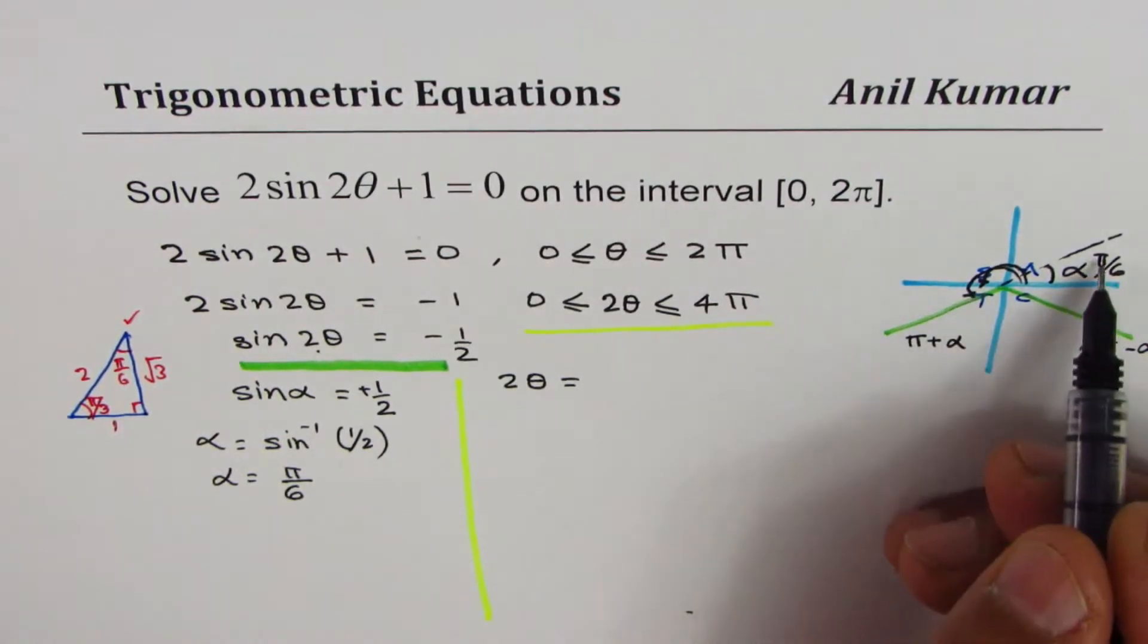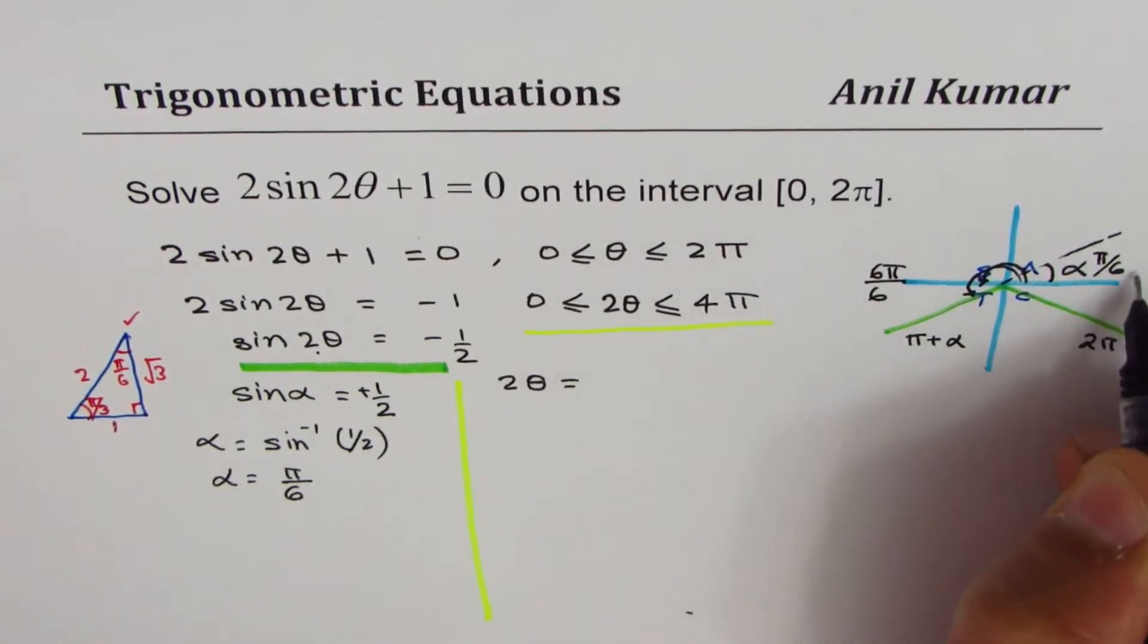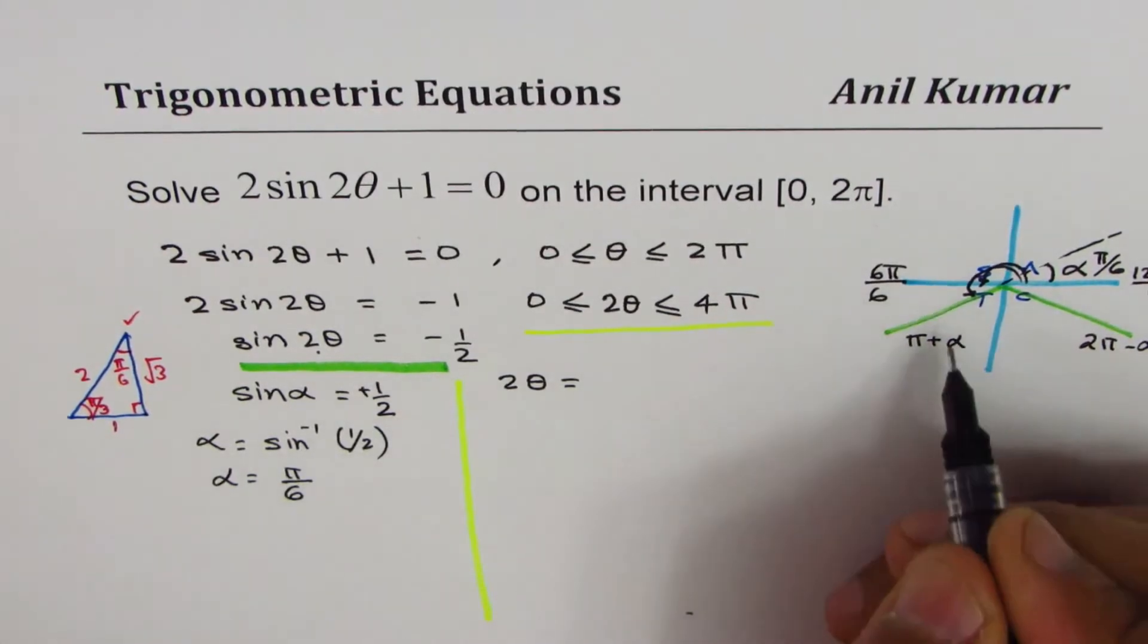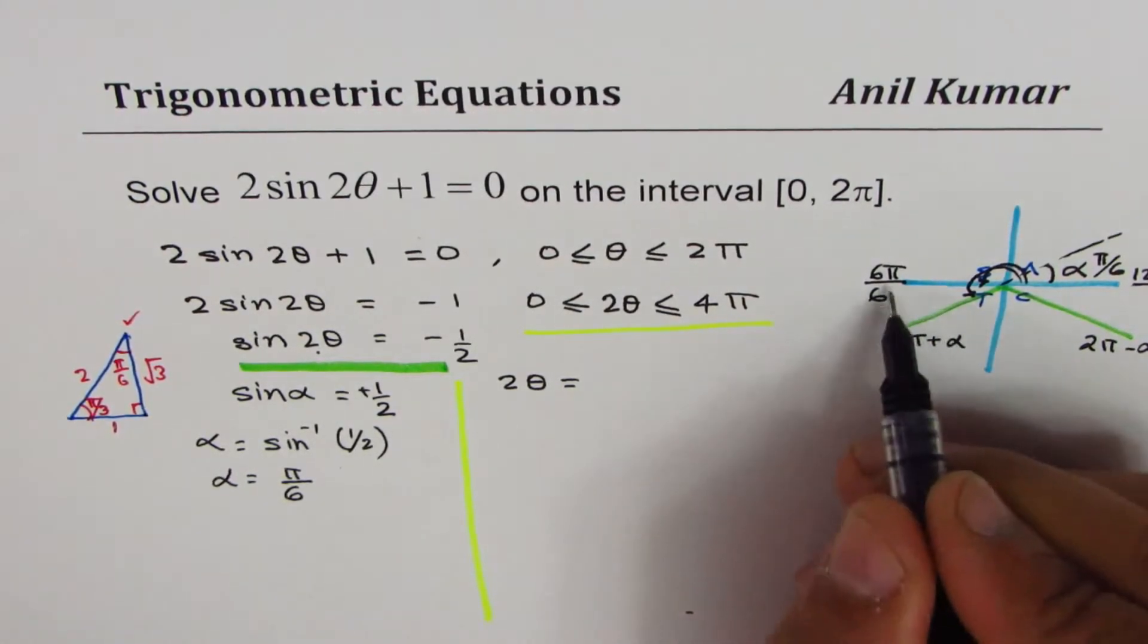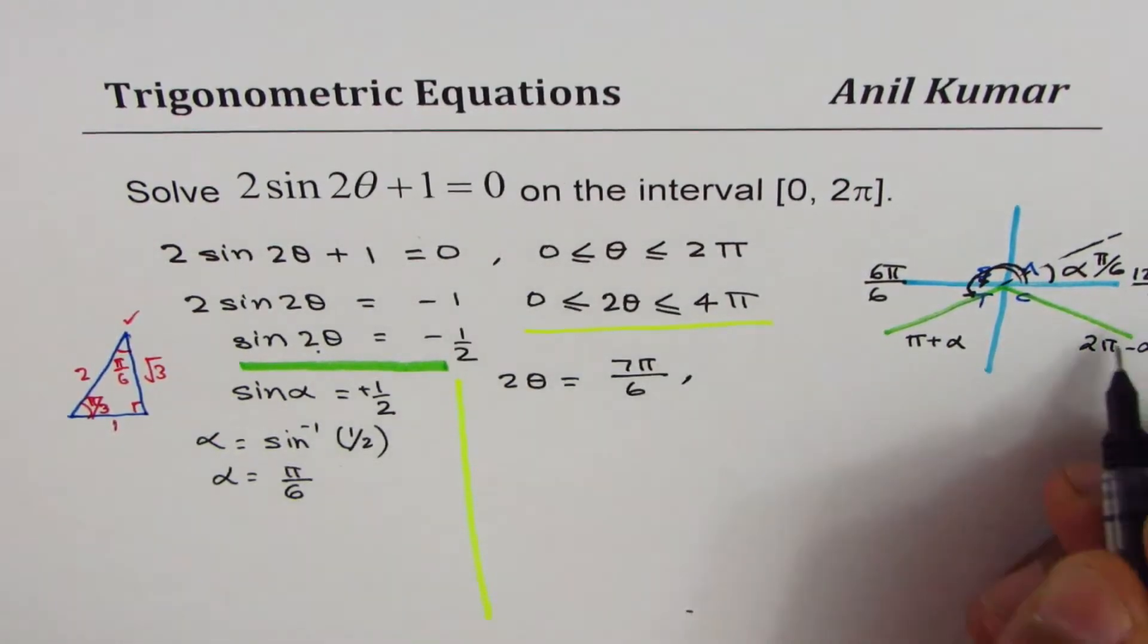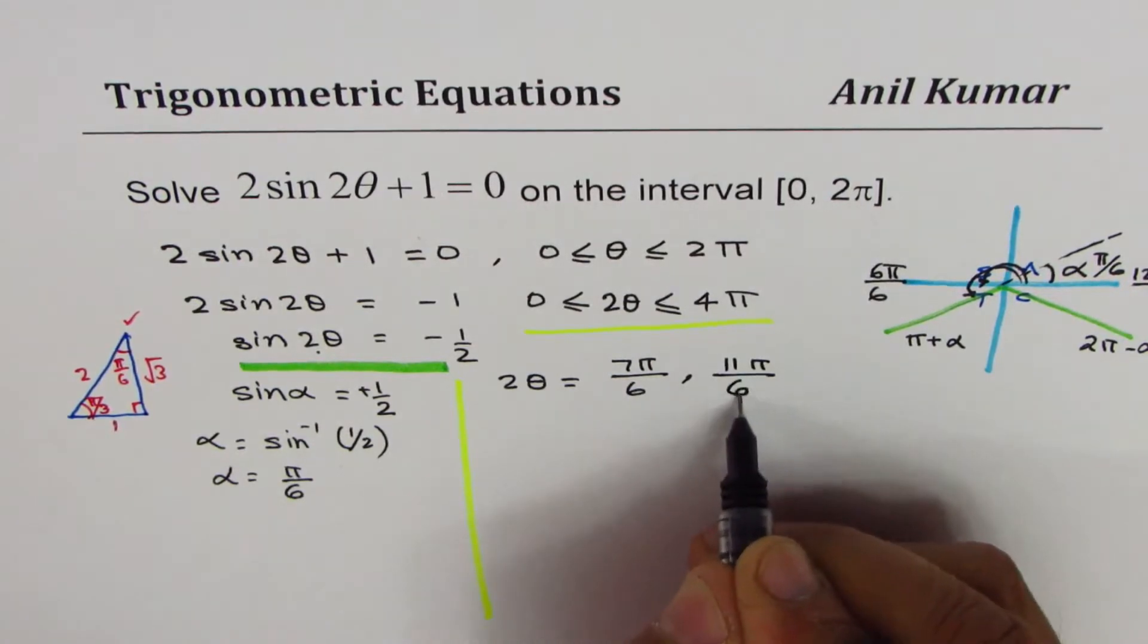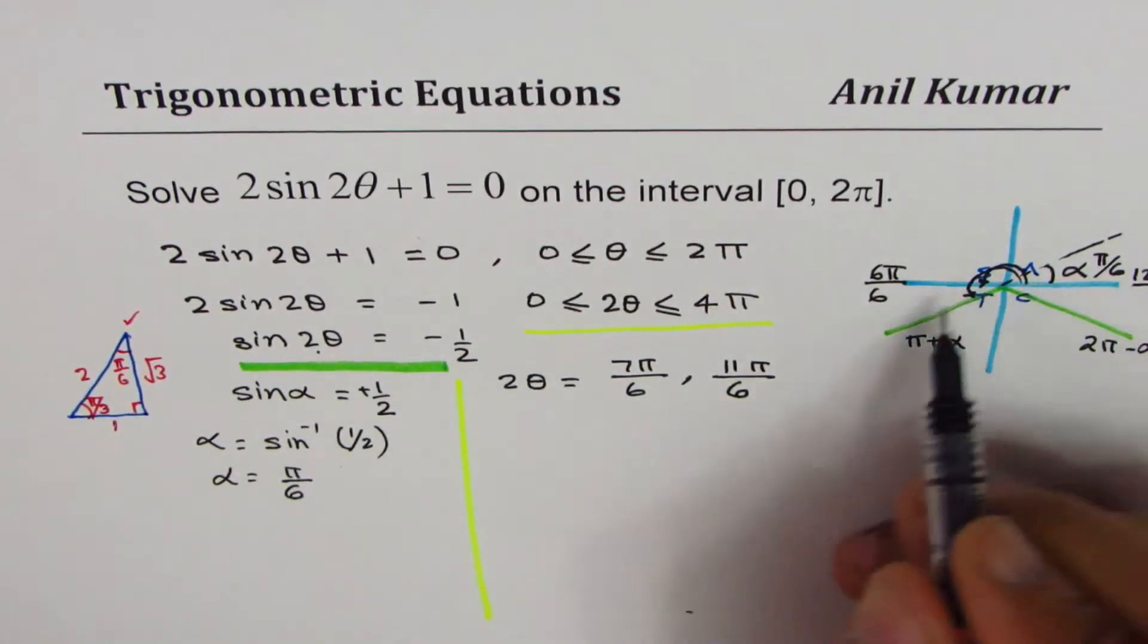π + α = π + π/6, which is 6π/6 + π/6, so this is 12π/6 for easy calculation with the same denominator. One more than that gives us 7π/6. This side will be one less than 12, so 11π/6.